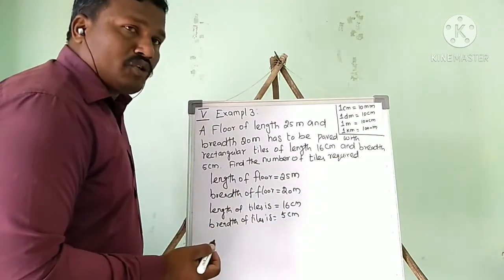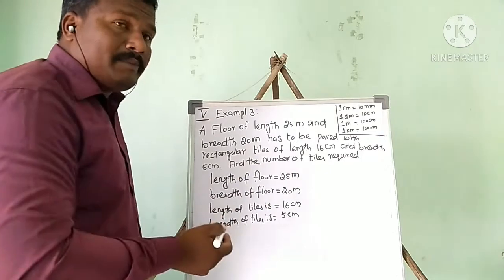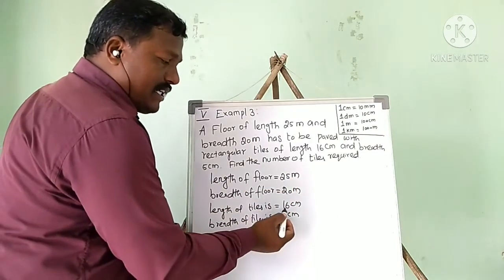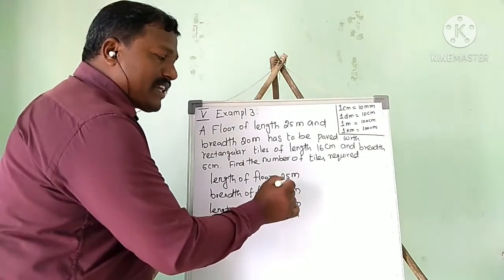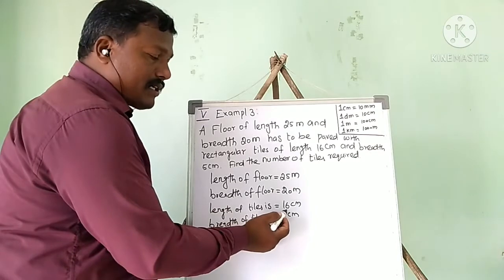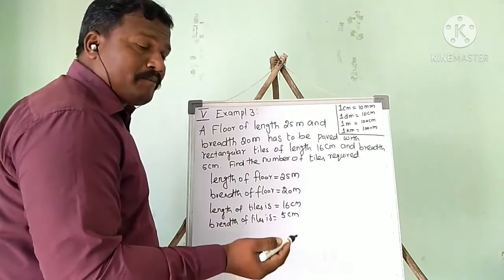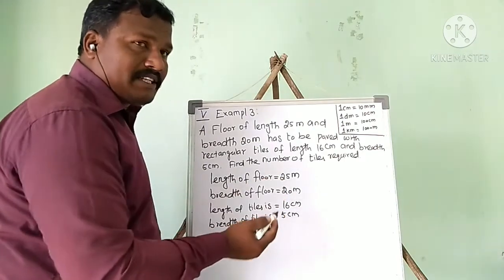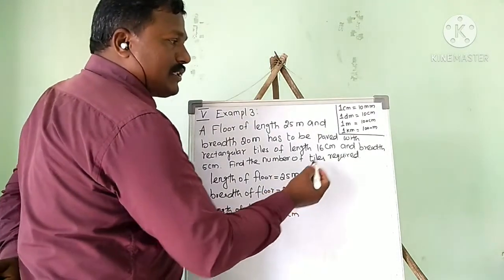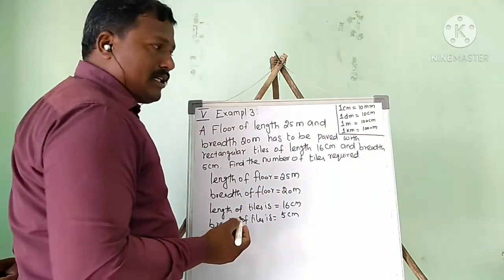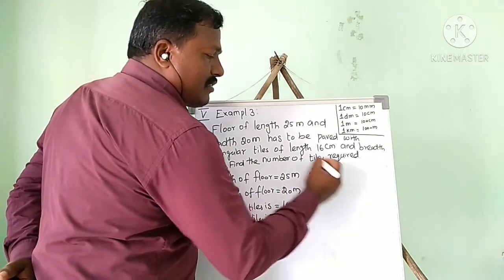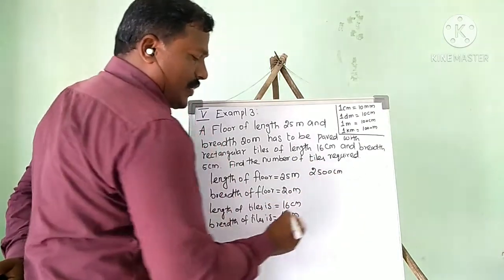If you notice, all the units are not the same — the floor dimensions are in meters and the tile dimensions are in centimeters. We need to convert all units to be the same. We will convert the meters to centimeters. Using the conversion: 1 meter equals 100 centimeters, so 25 meters equals 2500 centimeters.